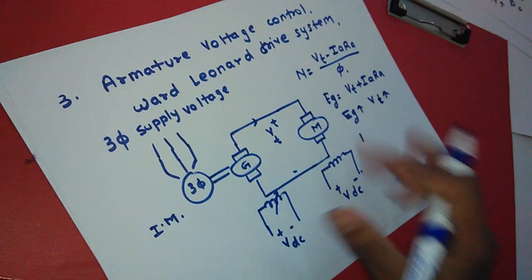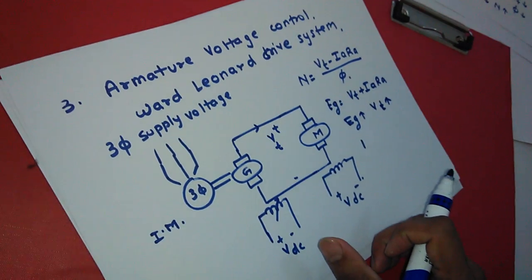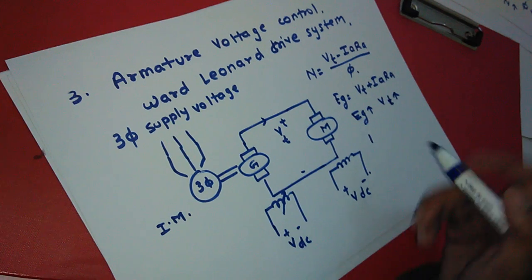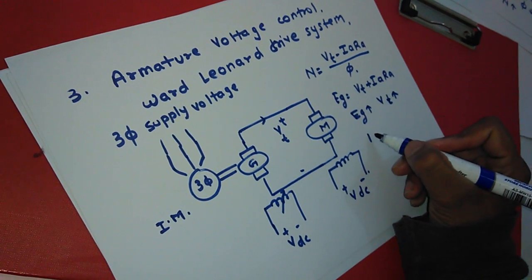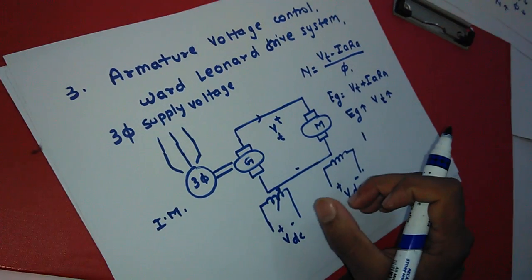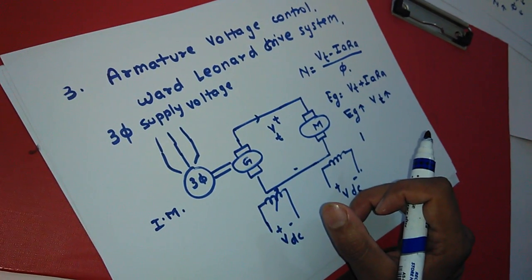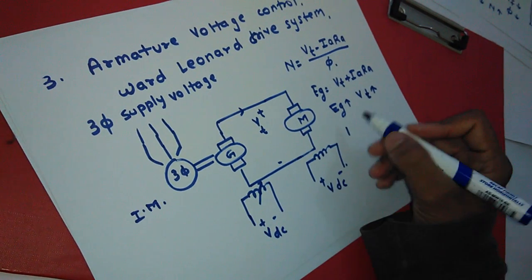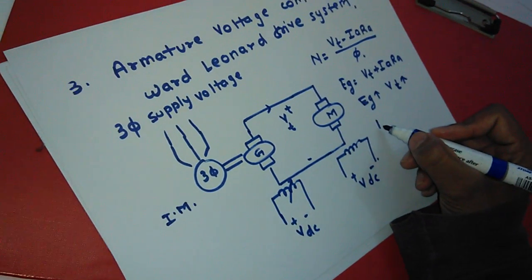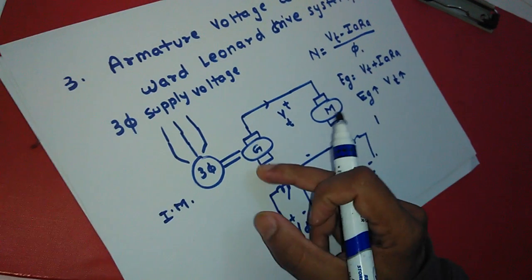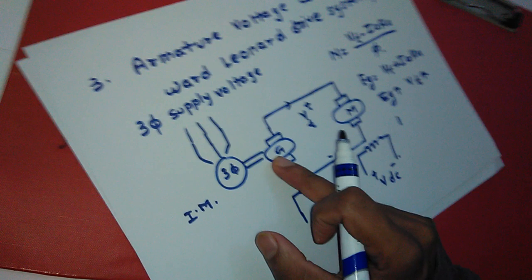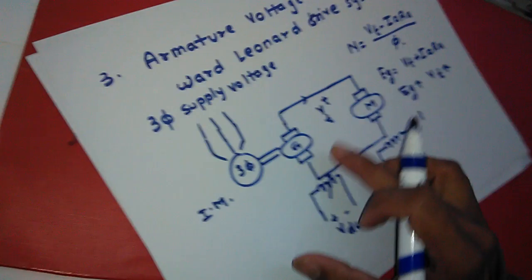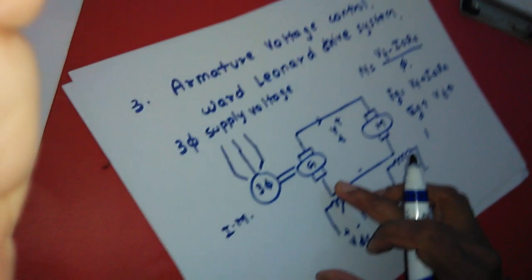This is the speed control by the armature voltage method. The advantage is that we can change the speed over a wide range from zero to base speed. The disadvantage is that it requires a motor-generator set, so it is costly, and it also requires more floor area. This is all about the speed control of DC motor.